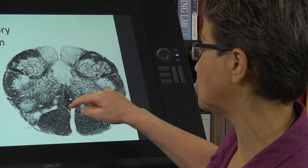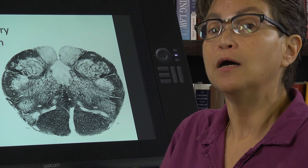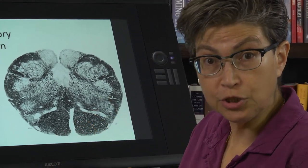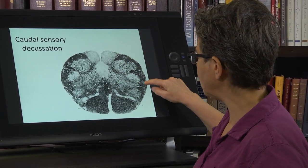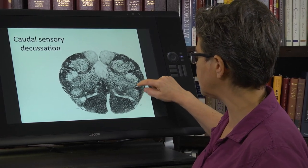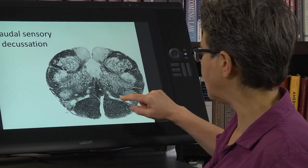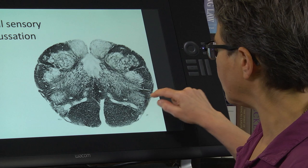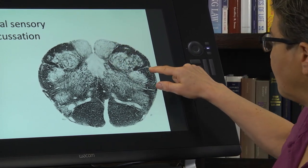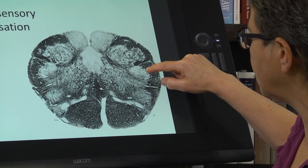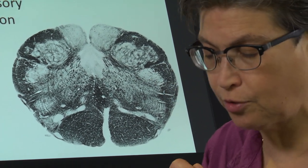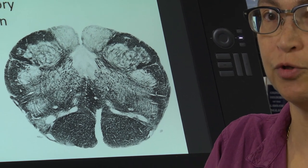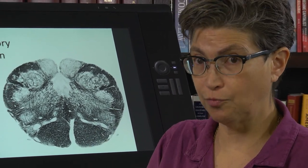The medial lemniscus sits right on the midline, so a single lesion there might affect function bilaterally. The spinothalamic tract is still sitting in essentially the same ventral lateral area. We still have the medullary dorsal horn; you can see the spinal trigeminal tract and spinal trigeminal nucleus. This is one of the important cranial nerve nuclei associated with the trigeminal nerve — arguably the most important.